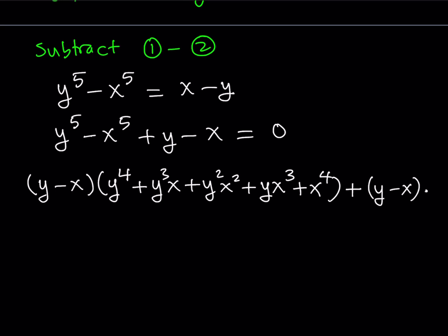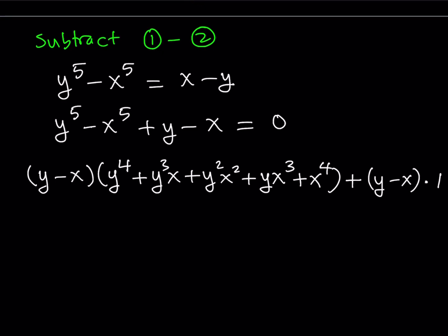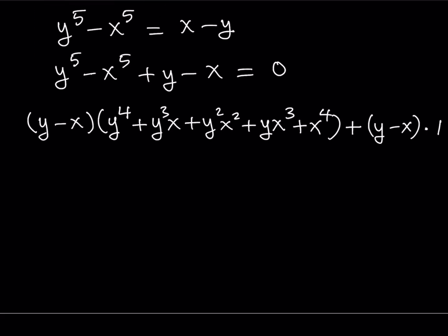That's the y^5 - x^5 plus I have y - x. Now y - x is a common factor. Let's factor it out. This gives me y^4 + y^3*x + y^2*x^2 + y*x^3 + x^4 + 1. And the whole thing is of course equal to zero.